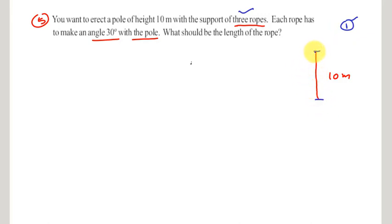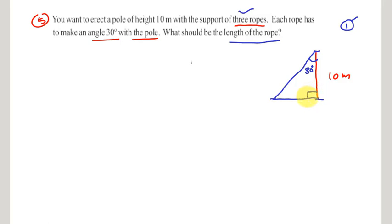Suppose this pole is supported by one rope making 30 degrees with the pole — the blue line represents the rope. This forms a right angle triangle, because the pole is vertical to the base, giving 90 degrees. Let AB be the pole and AC be the rope, so we get right angle triangle ABC in which angle B is 90 degrees.